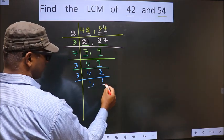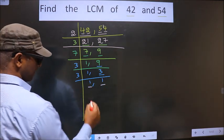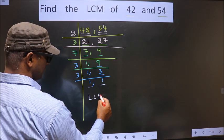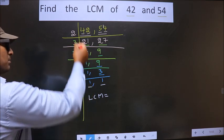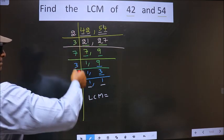So, now we got 1 in both the places. So, now our LCM is, LCM is the product of these numbers.